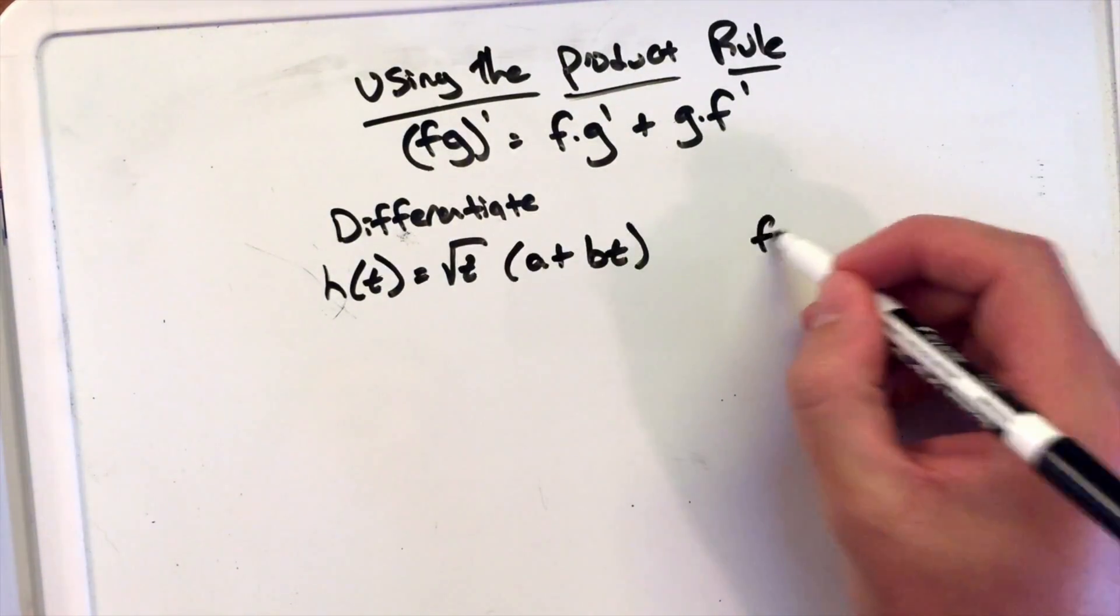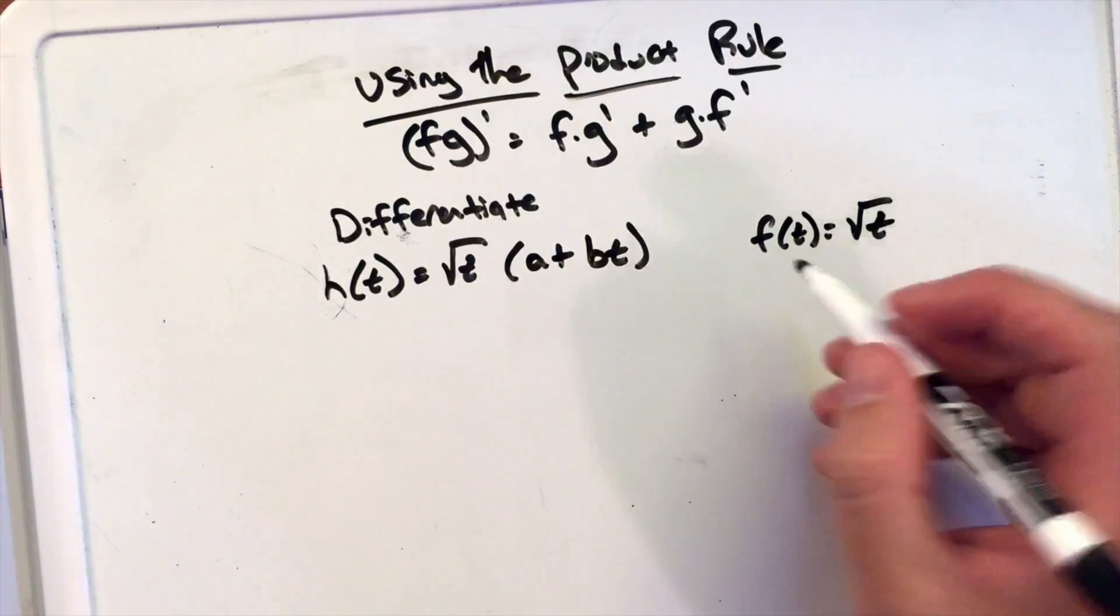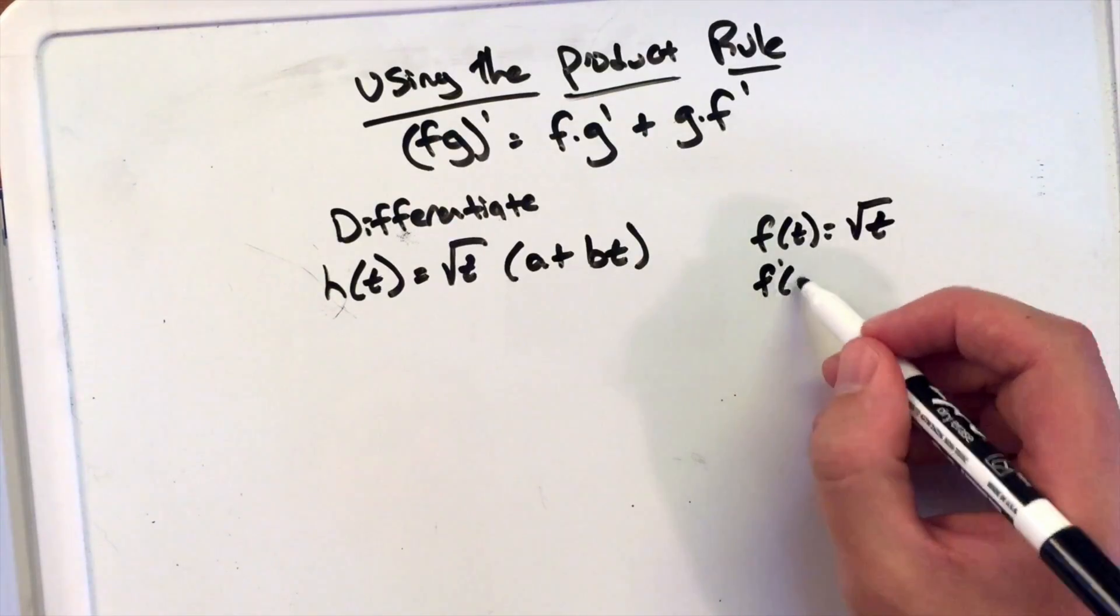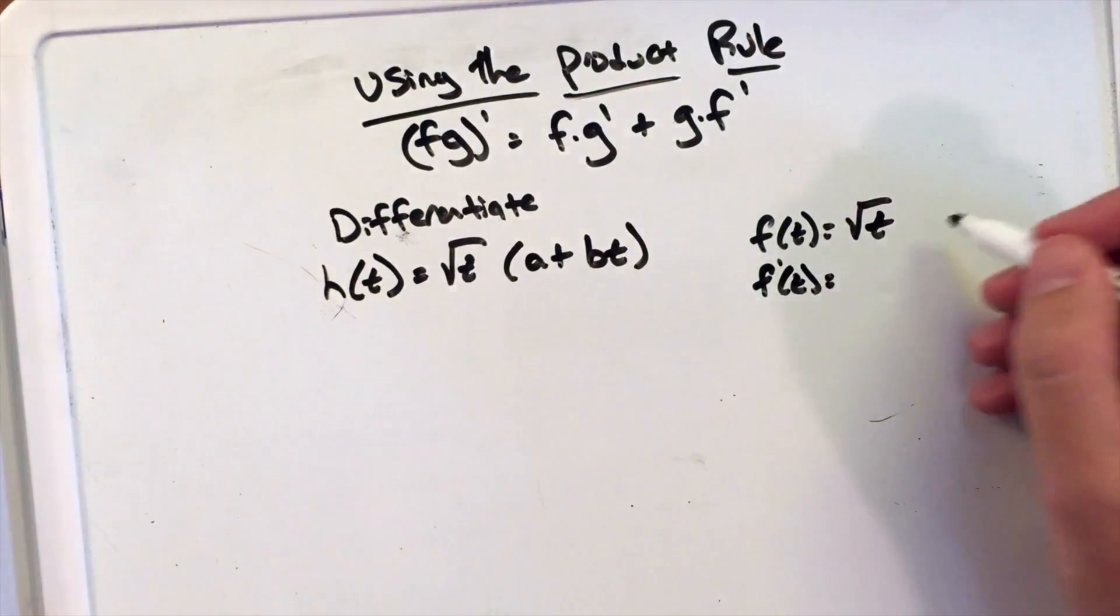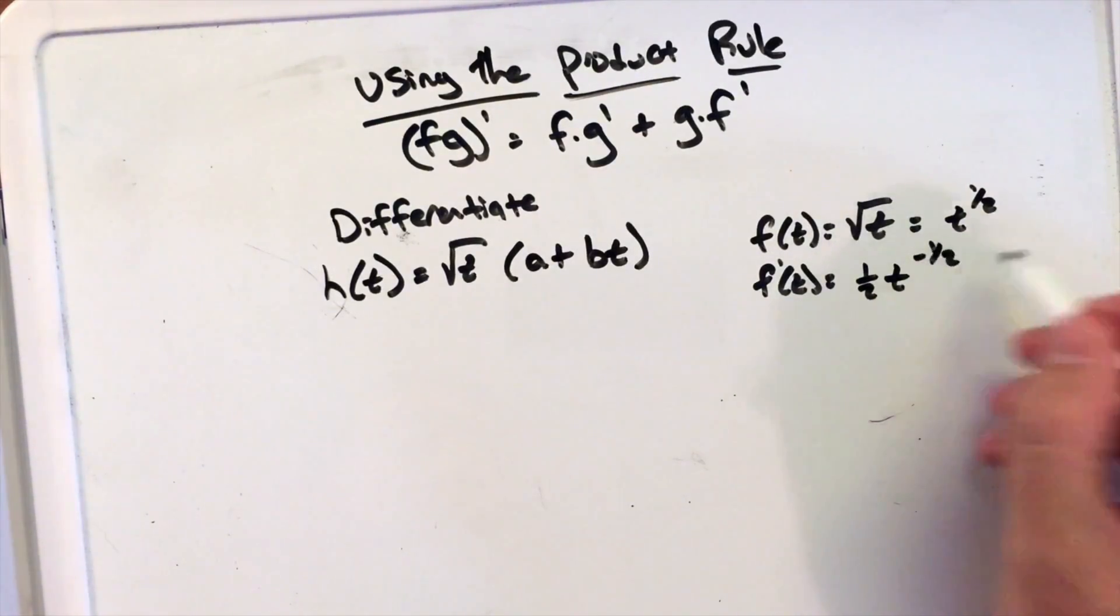Let's go label our f of t. F of t is the square root of t, and f prime of t then becomes what? Well, we know that square root of t is the same thing as saying t to the one-half, so we use power rule to say it's one-half t to the negative one-half power.